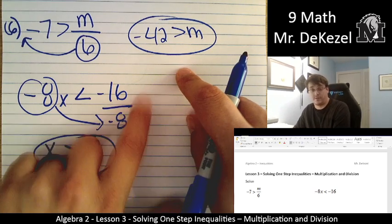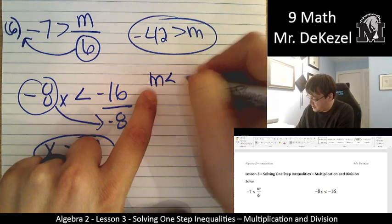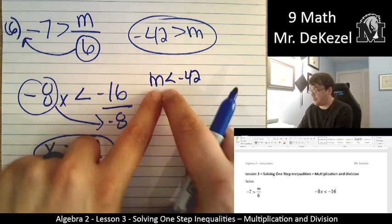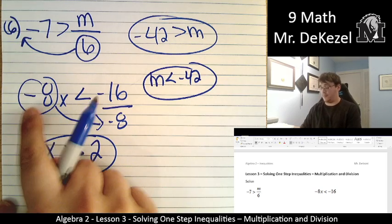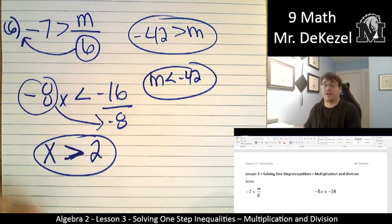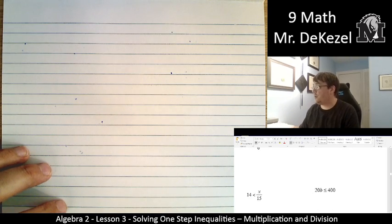I guess what I should have done for this one is I should have written it as m on this side, so m is actually less than minus 42. I keep the small side pointing towards m, but when we multiply or divide by a negative number, we flip the direction of the inequality. Let's do a few more.